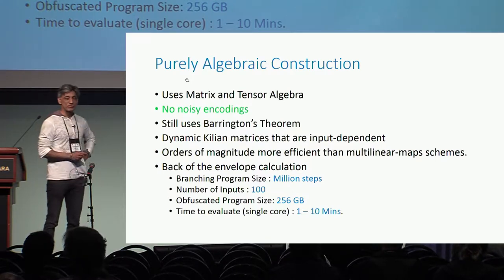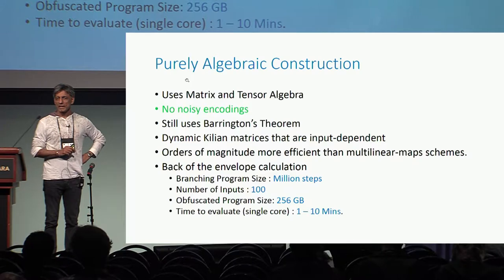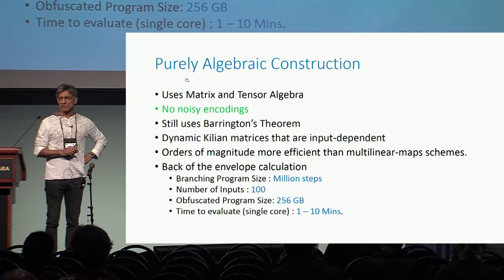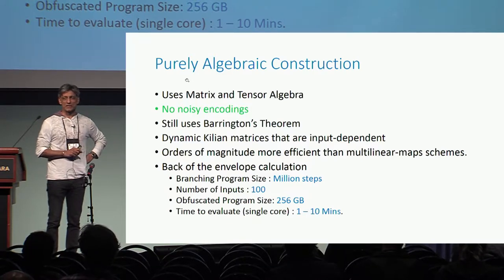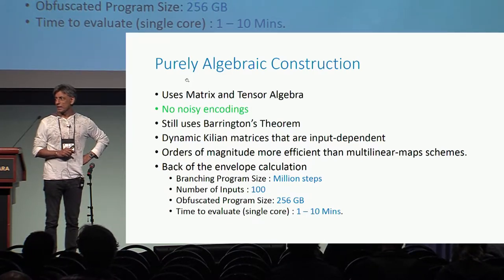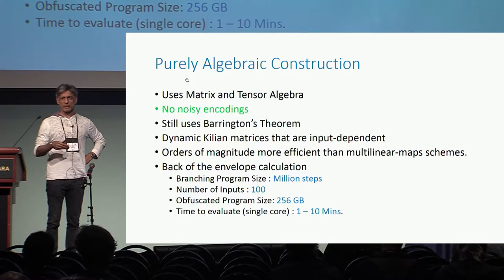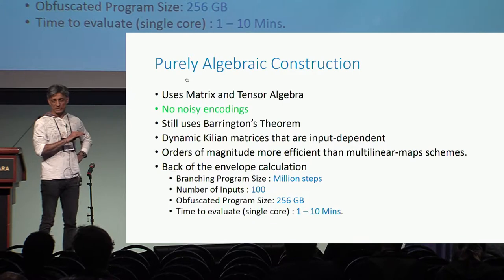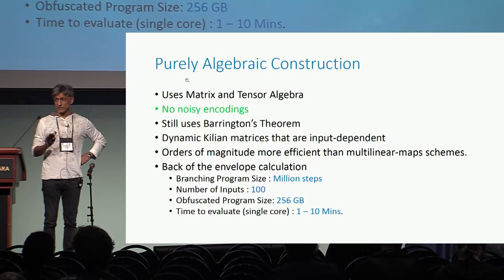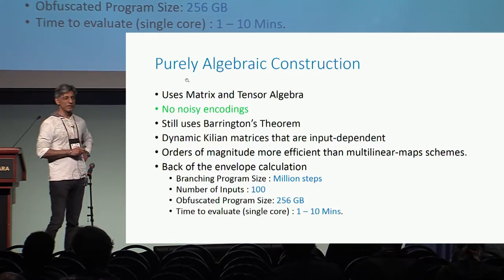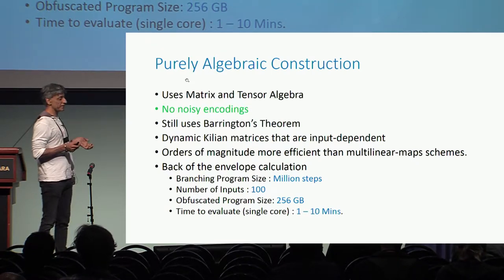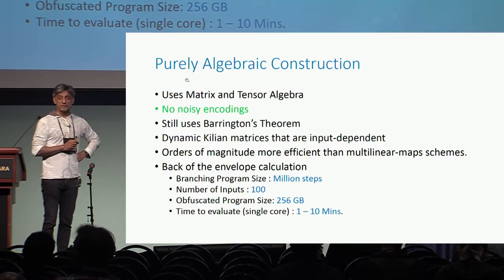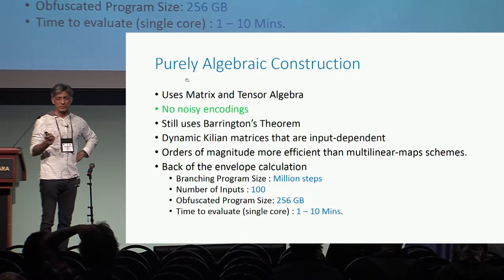First of all, it's a purely algebraic construction. Over the last few years, we have seen some obfuscation candidates. They were based on multilinear maps, and multilinear maps themselves based on noisy encodings. Our scheme is completely different in that regard — we do not use any noisy encodings. It's purely algebraic, and it uses matrix algebra and some tensor algebra — tensors of matrices.